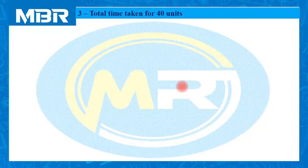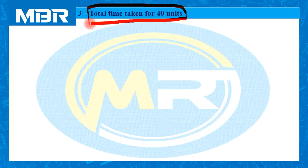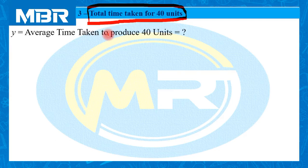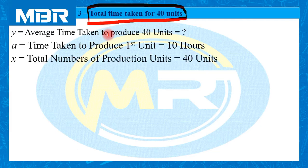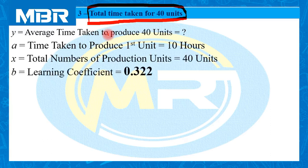Let us move to the third question — calculating the total time taken to manufacture 40 units. Y is the average time taken to produce 40 units, which we must calculate first. A, the time taken to produce the first unit, is 10 hours, ready-made given. X, total number of production units, is 40. And the learning coefficient B is 0.322.